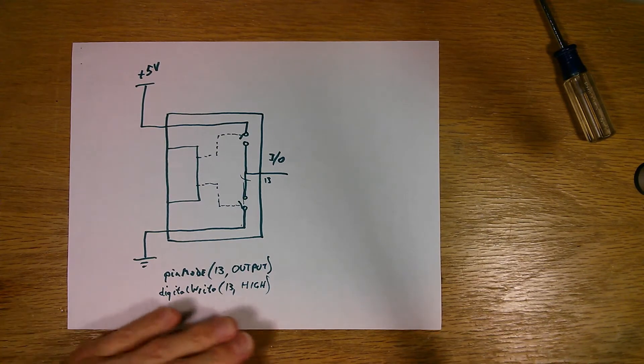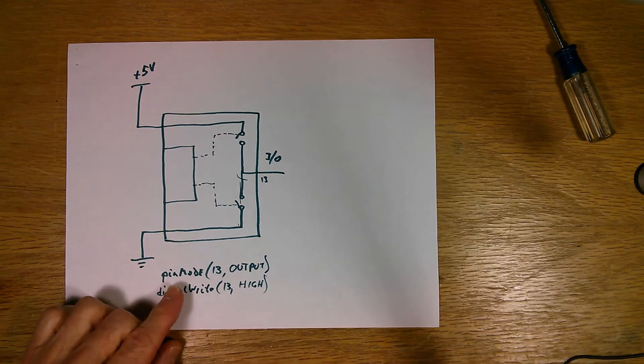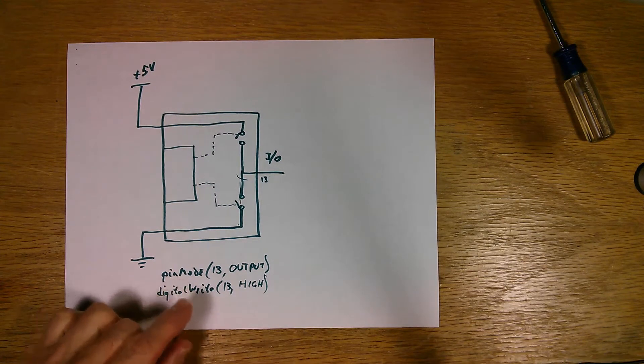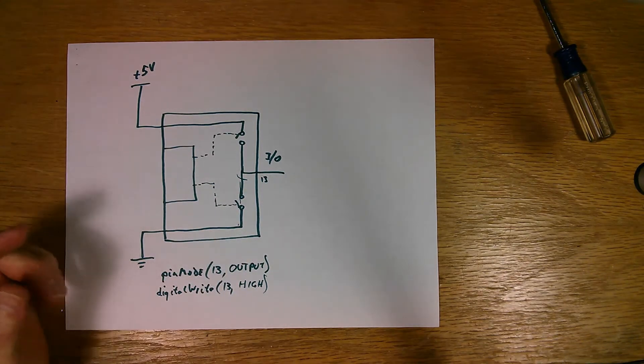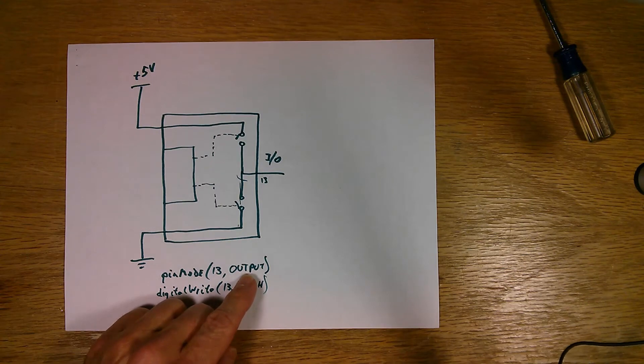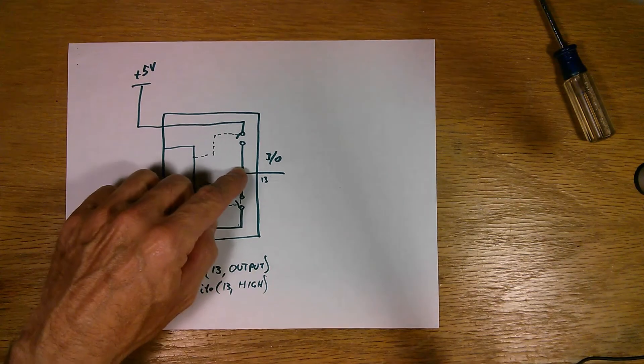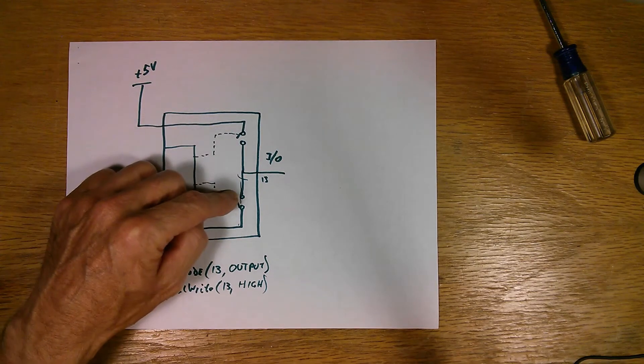The instructions for doing that, first of all, to set up an I/O pin to be an output, you'd use the pin mode instruction with the pin number. In this case I chose 13, which happens to be that pin that that LED is hooked up to. And then the word output, and that makes this I/O pin an output. What it does is it turns on one or the other of these two transistors.